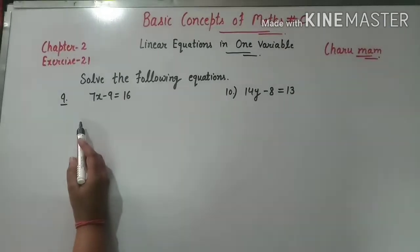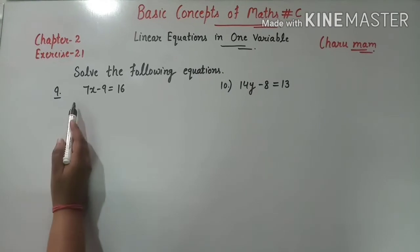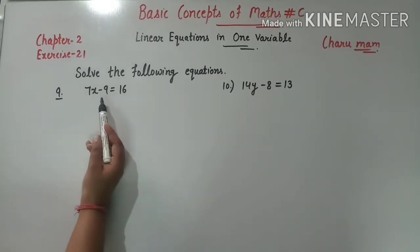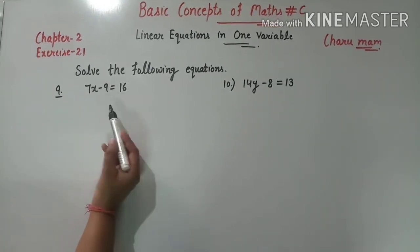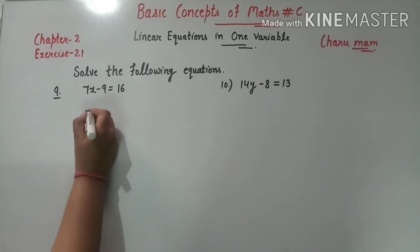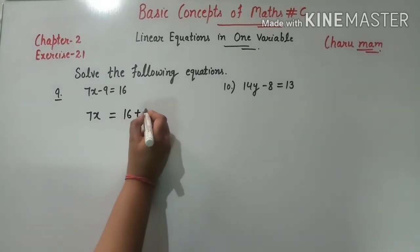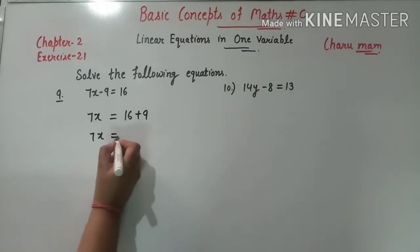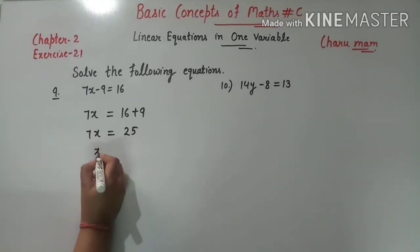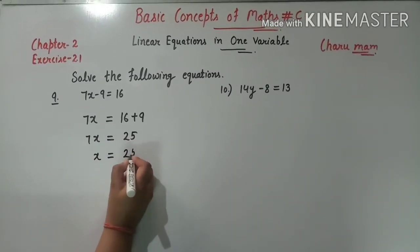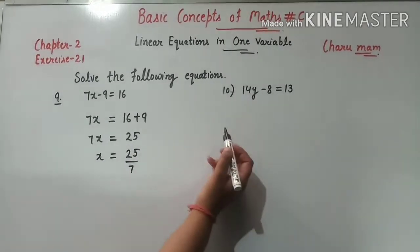Question 9: 7x minus 9 equals 16. Minus 9 right side जाएगा तो plus 9 हो जाएगा: 7x = 16 + 9 = 25. अब 7 multiply में है तो right side divide में जाएगा. So x की value है 25 upon 7.